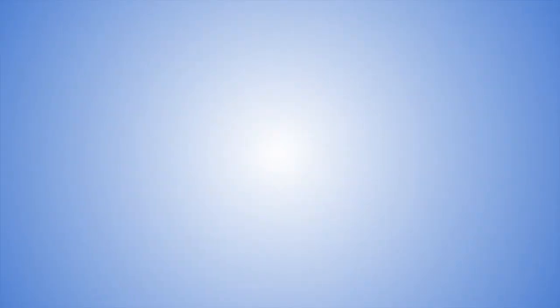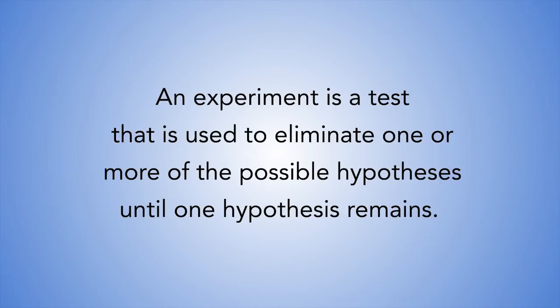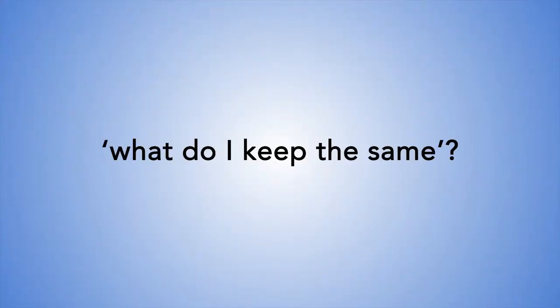The fourth step in conducting a scientific investigation is experimentation. An experiment is a test that is used to eliminate one or more of the possible hypotheses until one hypothesis remains. The experiment is the cornerstone in the scientific approach to gaining deeper understanding about the physical world. A scientific experiment involves controls — subjects that are not tested during the investigation — so that a scientist limits the factors or variables that can cause the results to differ. The controlled variable answers the question: what do I keep the same?